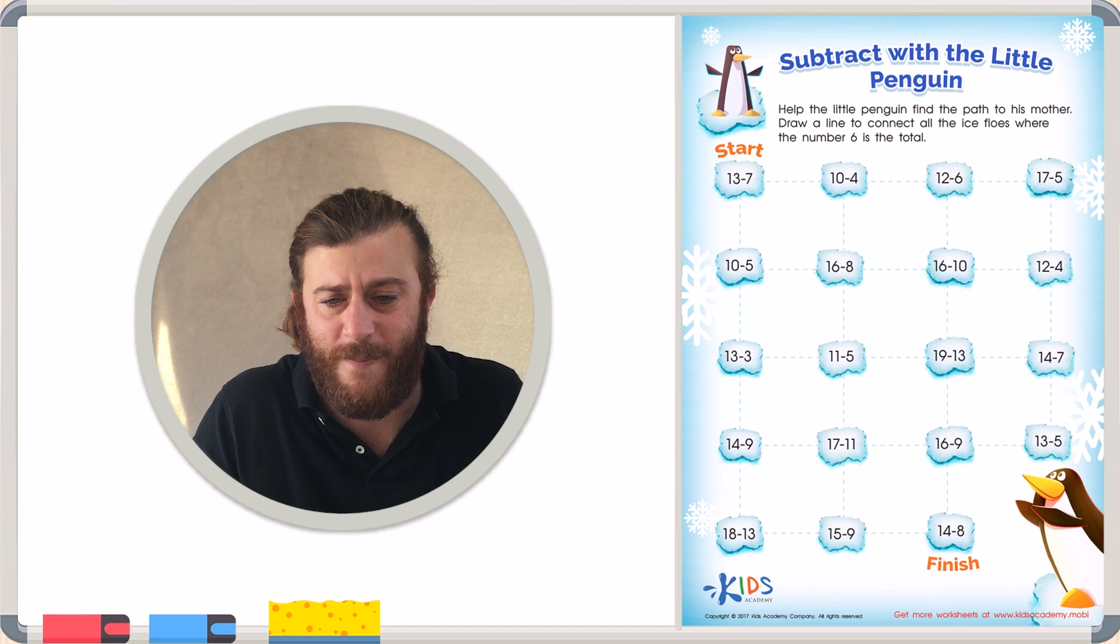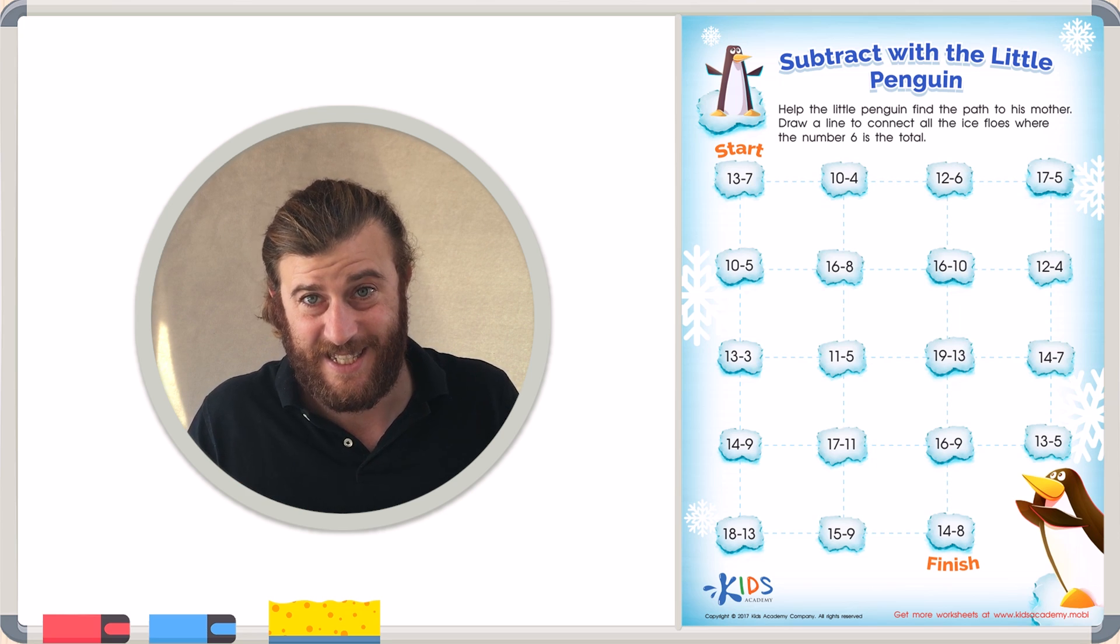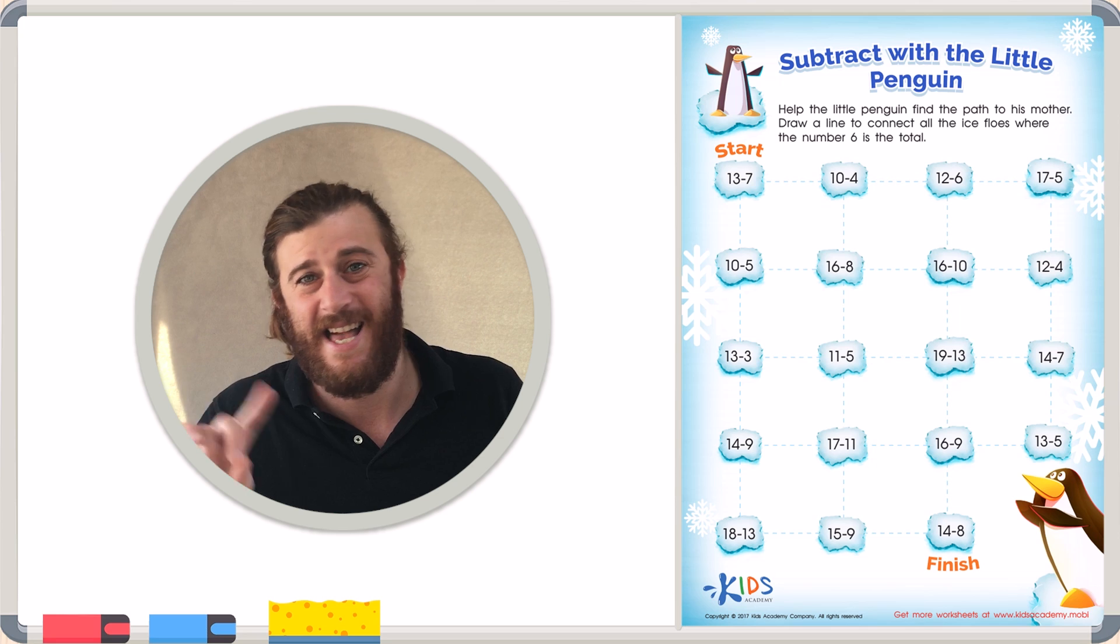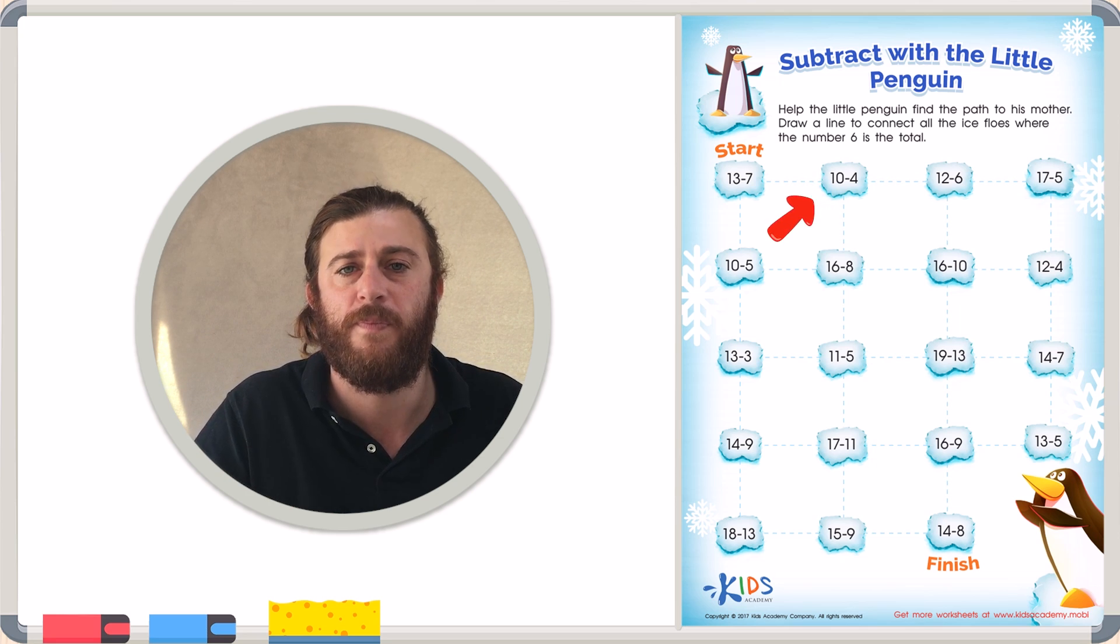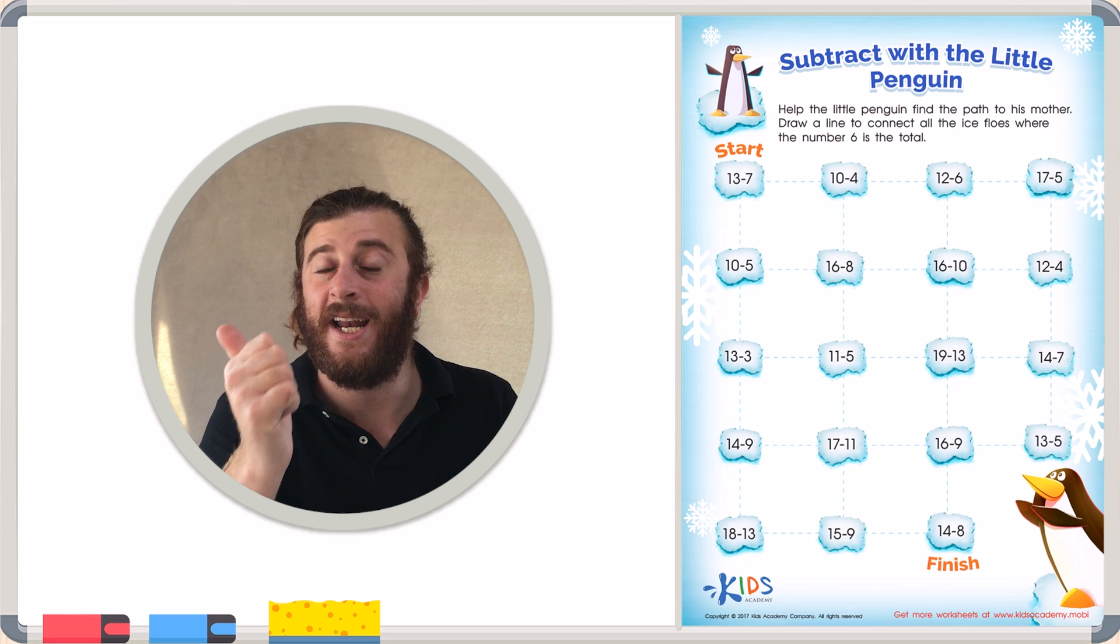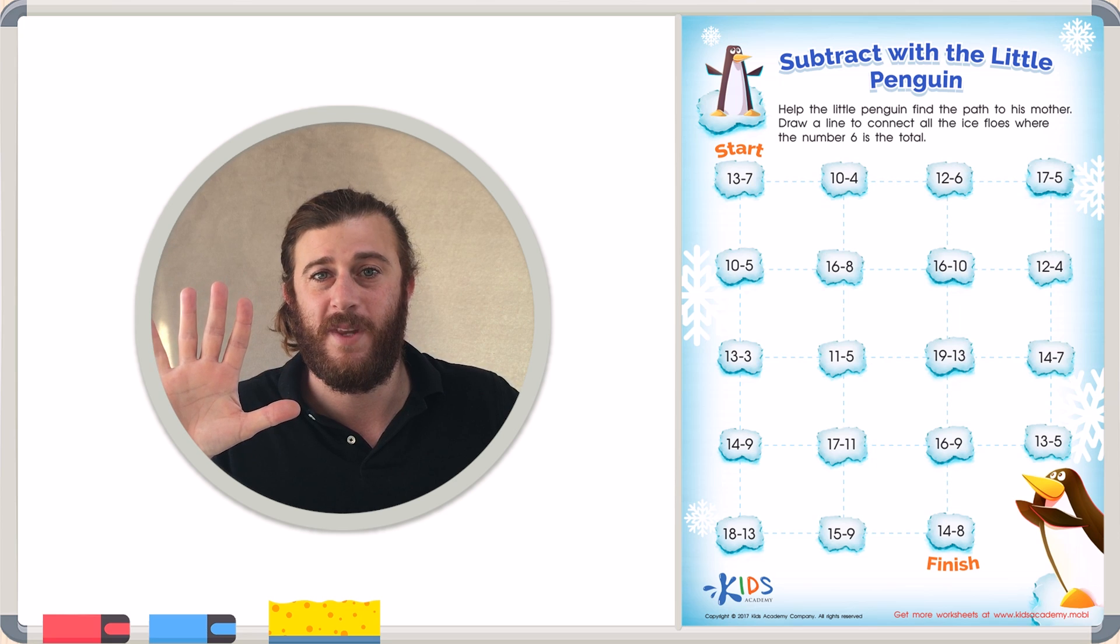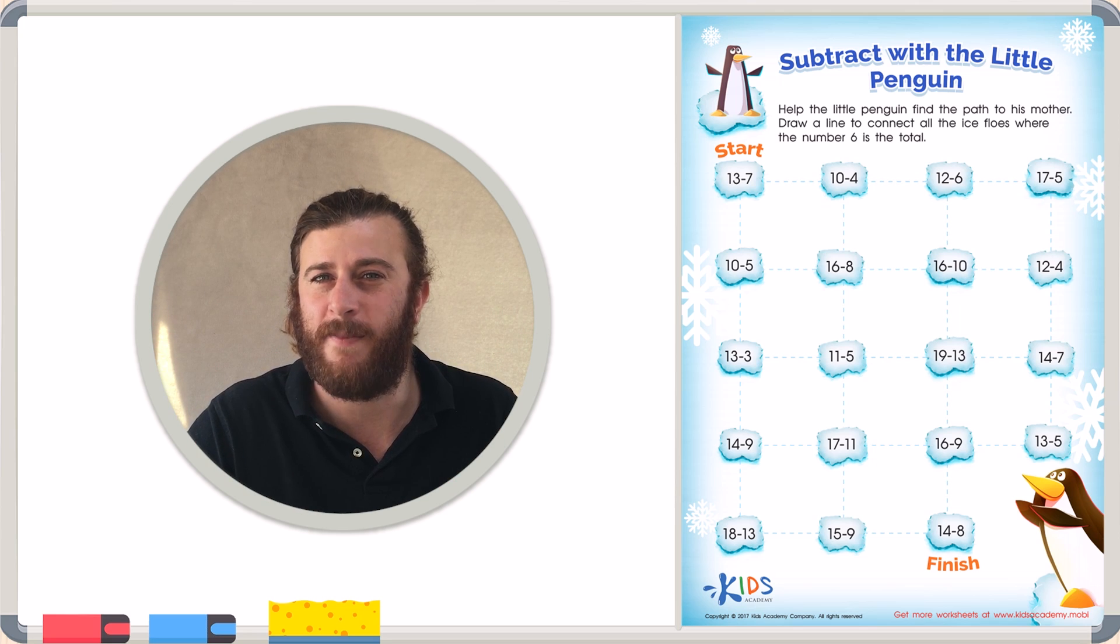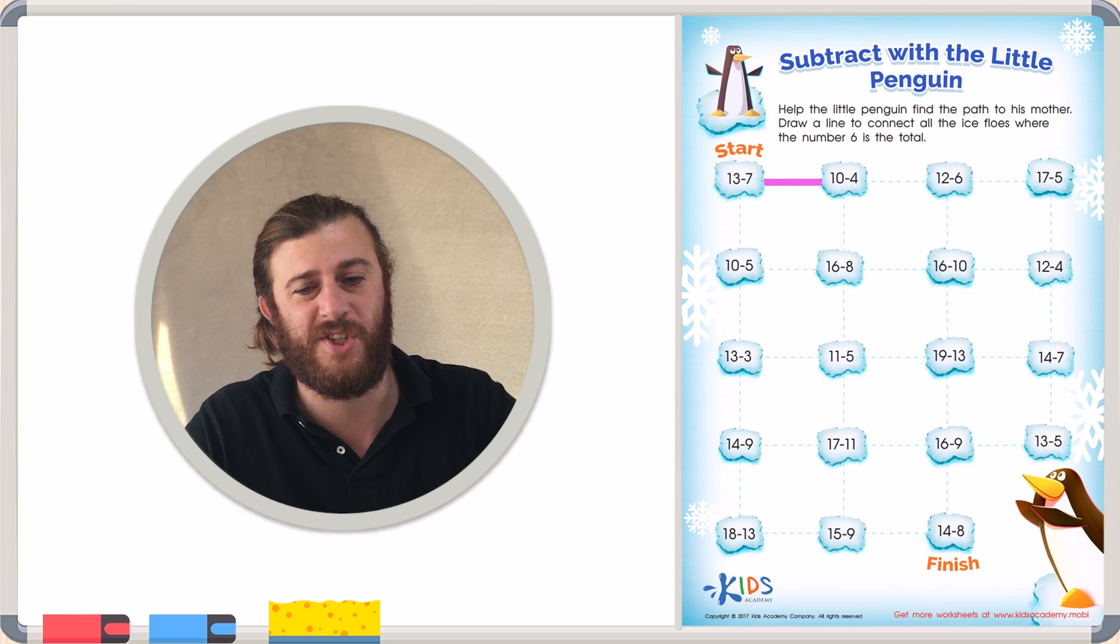Where are we going to move from here? I say we try all the numbers that are connected to this to see if 6 is the total. If it is, we'll draw a line. And if it's not, we'll know we have to try something else. So let's try 10 minus 4. Counting backwards again. 10, 9, 8, 7, 6, 5, 4. Do I have up 6 fingers? Yes, I do. So let's draw a line from 13 minus 7 to 10 minus 4. Good start.